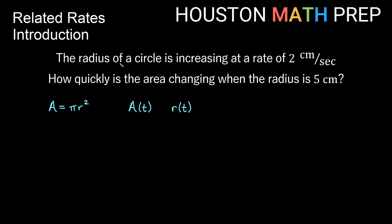This top statement here talks about the radius of a circle increasing at a rate of 2 centimeters per second. So that tells us that dr/dt, the change in radius with respect to time, is equal to positive 2 centimeters per second, and it's positive because we are increasing at that rate.